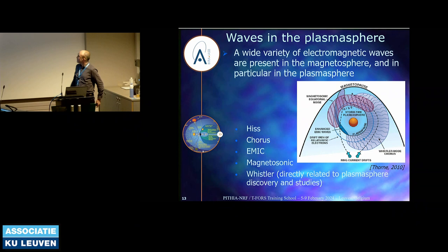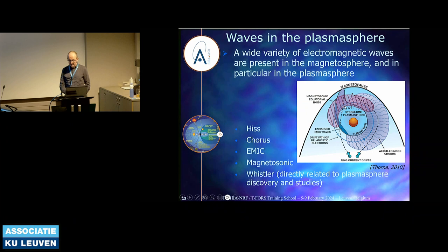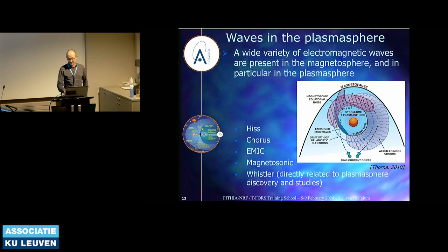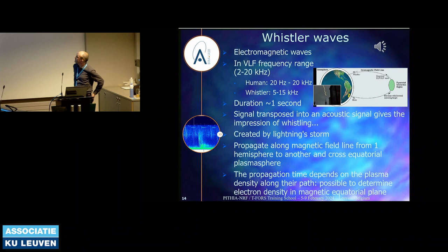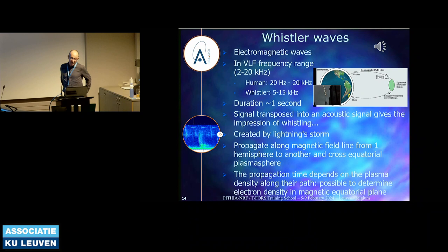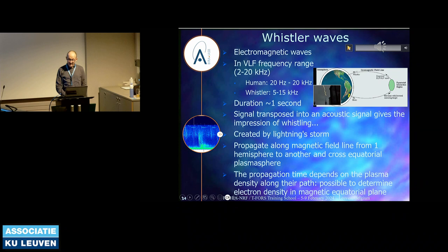There are also many electromagnetic waves in the magnetosphere, particularly in the plasmasphere. This sketch shows the magnetosphere with the magnetopause and the inner magnetosphere or plasmasphere region, with different waves called EMIC — electromagnetic ion cyclotron waves — Chorus, magnetosonic waves, and Whistler waves, which are directly related to the plasmasphere discovery and studies. Whistler waves are electromagnetic waves in the VLF frequency range from about 2 to 20 kilohertz. If we transpose this wave into an acoustic signal, it gives an impression of whistling.